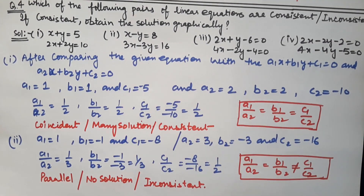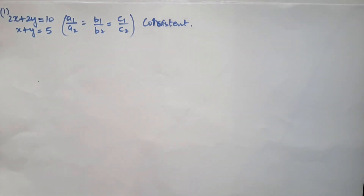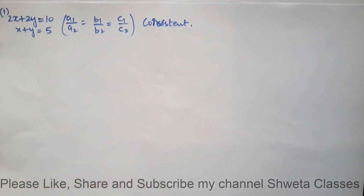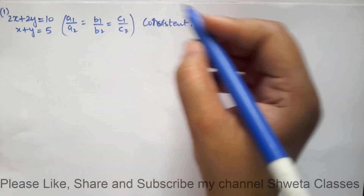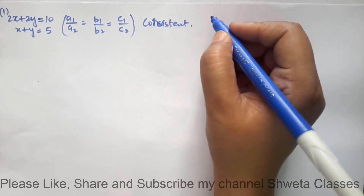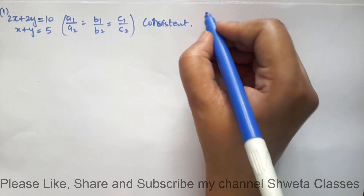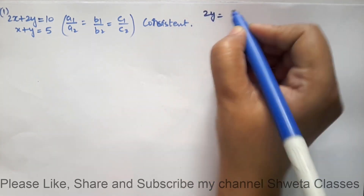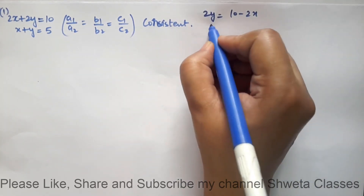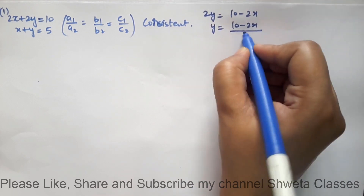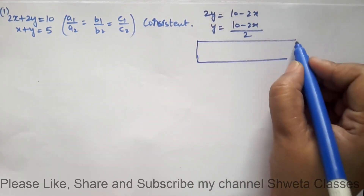Since Part 2 is inconsistent, we do not need to plot its graph. We will now plot the graph for Part 1. To do this, we write the first equation in the form of y: 2y = 10 - 2x, so y = (10 - 2x)/2. We will create a table to find some points.